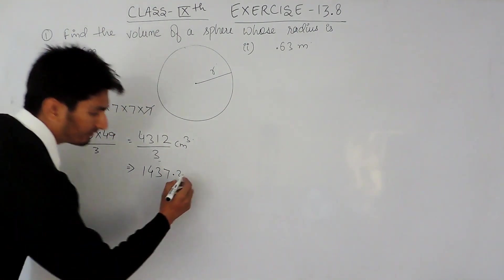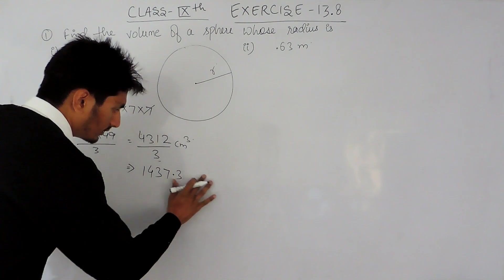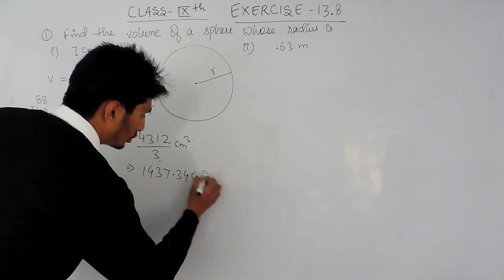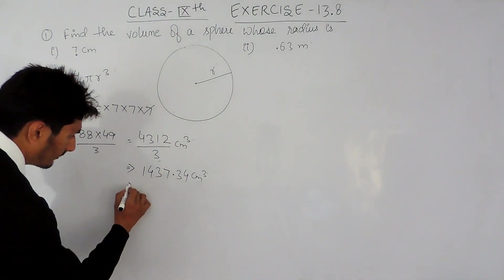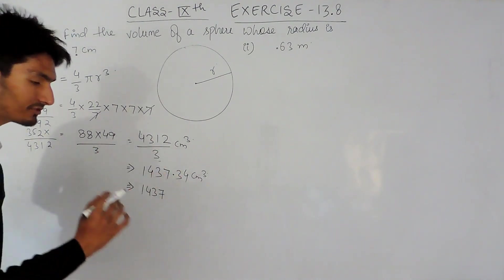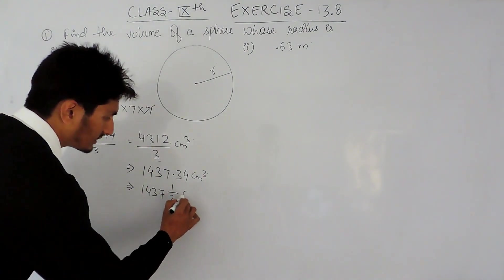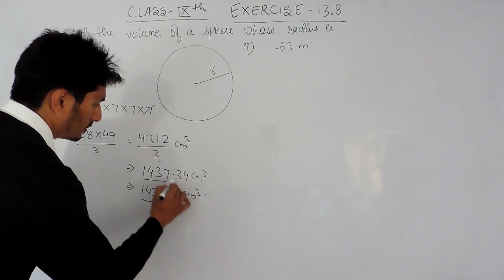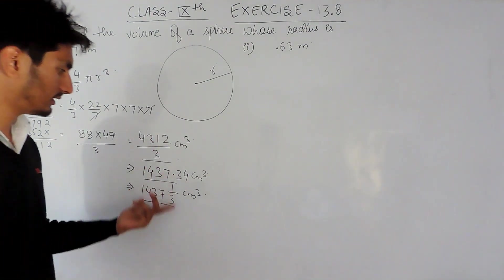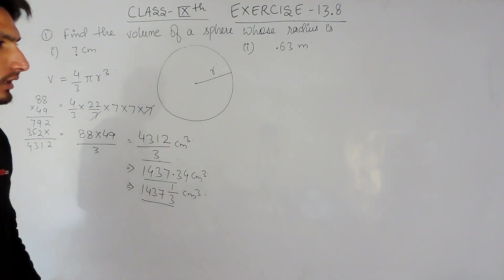Continuing the division, 3 repeats, giving 1437.33... centimeter cube — or 1437.34 centimeter cube rounded. When expressed as a mixed fraction, it is 1437 and 1/3 centimeter cube. All three forms of the answer are acceptable — it is your choice which representation to use.